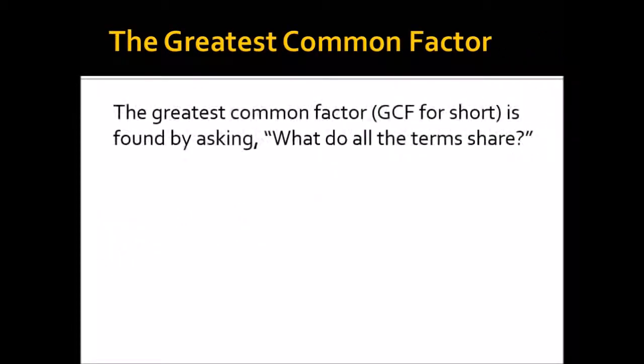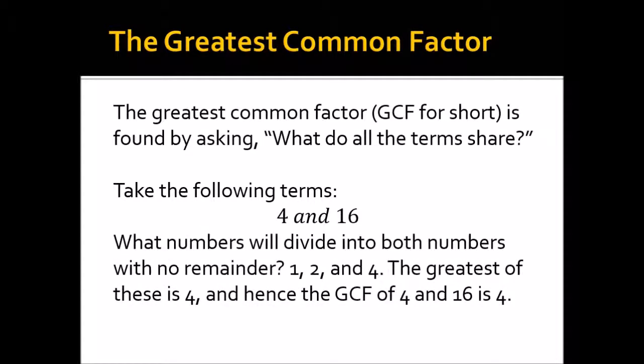First off, what is the greatest common factor? Well, the question that we have to ask is, what do all the terms share? So take the following terms, 4 and 16. What numbers do these terms share? If we think, what numbers will divide into both of these with no remainder? A 1, for instance, will evenly go into 4 and 16, as will 2 and 4. So between 1, 2, and 4, the greatest of these is 4. And so your greatest common factor is therefore a 4.